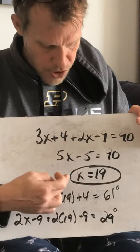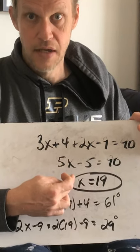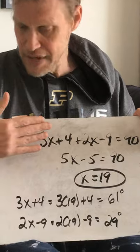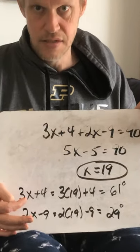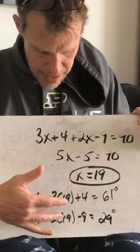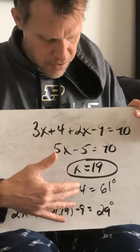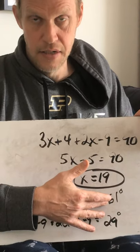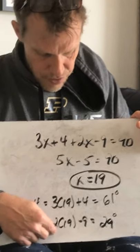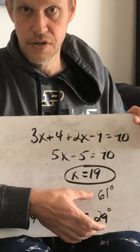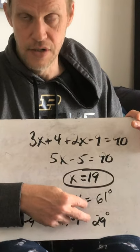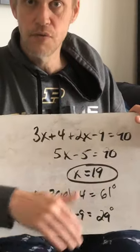That gives you the equation 5x minus 5 equals 90. Solve it all the way down and you get x equals 19. Now if Khan asks for the value of x, you stop here. But if Khan asks for one of the angle measurements, you plug x equals 19 into each expression. For 3x plus 4: 3 times 19 is 57, plus 4 — that angle is 61 degrees. For 2x minus 9: 2 times 19 is 38, minus 9 — that angle is 29 degrees. And notice they both add up to 90 degrees because they're complementary.